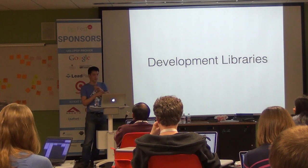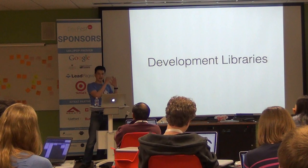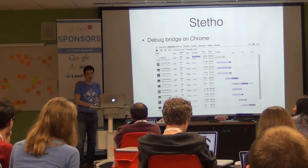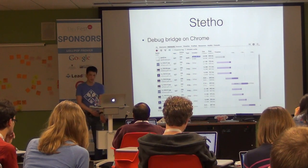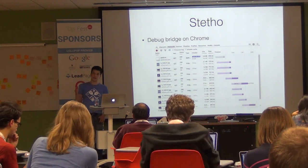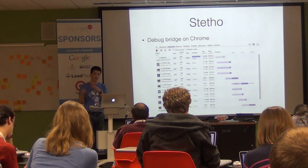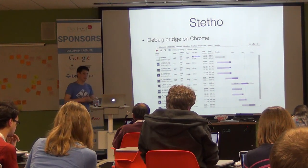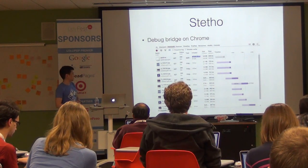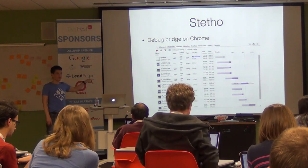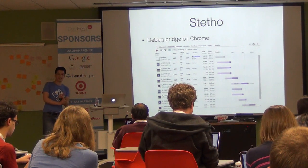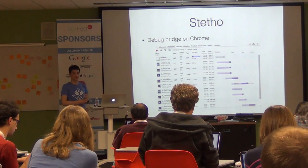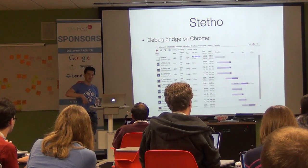I wanted to talk briefly about some development-side libraries — tools to make development easier. One that just got released about a month ago is Stetho from Facebook. You hook it into your code, and within Chrome you can actually connect to devices on the same network and inspect what's going on on your device. For example, you can hook Stetho up to your HTTP library and view your HTTP requests in Chrome. This is great for debugging how long things take, what order they load in, and what requests and responses look like — a huge time saver compared to scrolling through logcat.